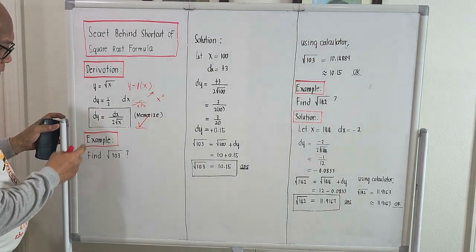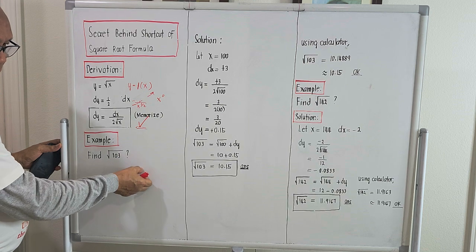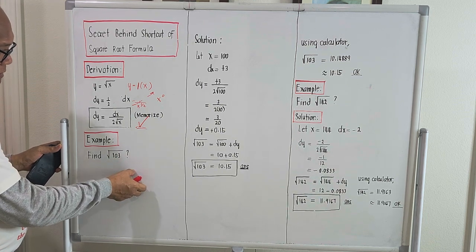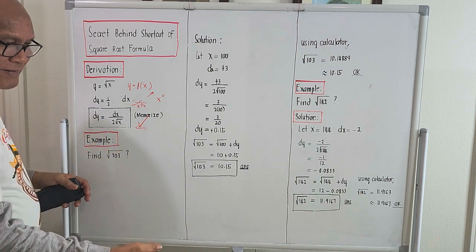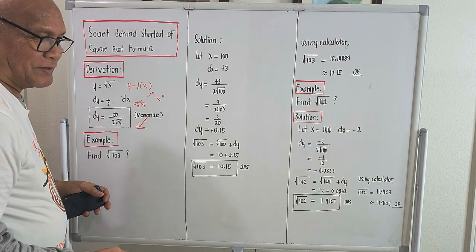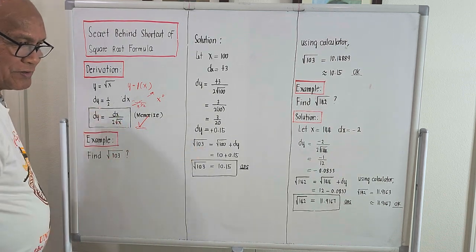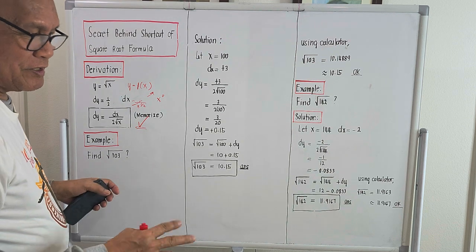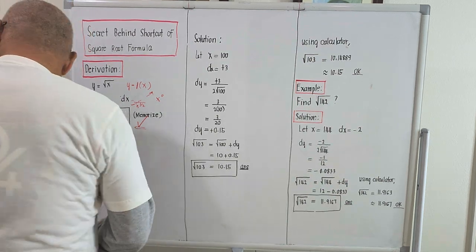Example number one: find the square root of 103. To find the square root of 103, we will be using this formula. Like what I said, it's not a trick — the solution actually emanates from differential calculus, not a trick.